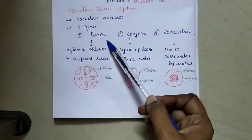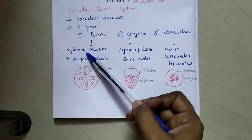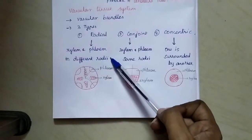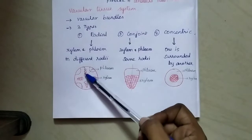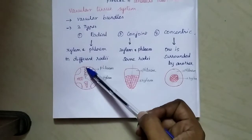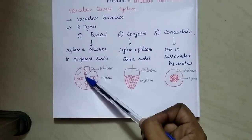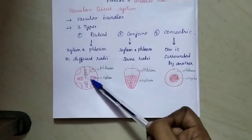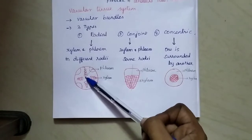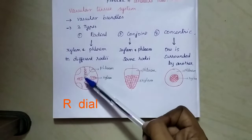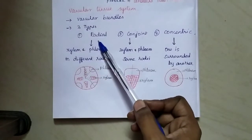In the radial type vascular bundle, xylem and phloem are arranged in different radii. Look at this diagram — this is xylem and this is phloem. Xylem is arranged in one radius and phloem is arranged in another radius. Likewise, xylem and phloem are arranged alternatively. This type of arrangement is known as a radial vascular bundle.